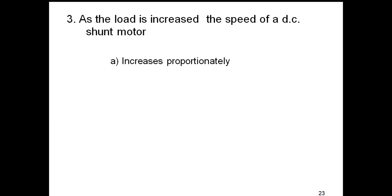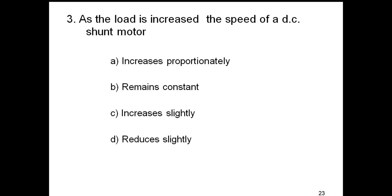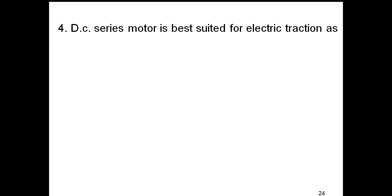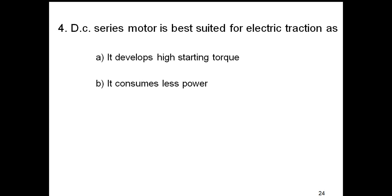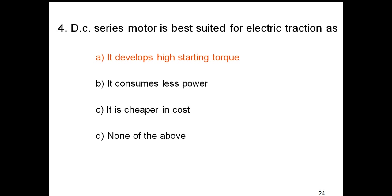The third question is: as the load is increased, the speed of a DC shunt motor — increases proportionally, remains constant, increases slightly, or reduces slightly? The answer is: reduces slightly. The fourth question is: a DC series motor is best suited for electric traction because it develops high starting torque. And when an electric train is moving down a hill, the DC motor will operate as a DC series generator.